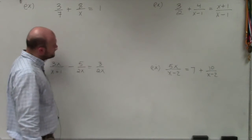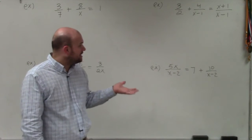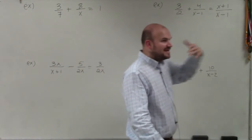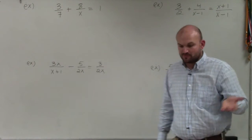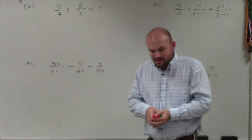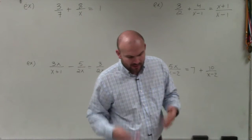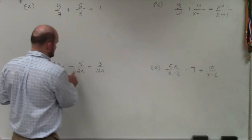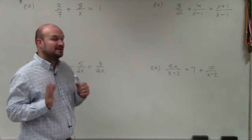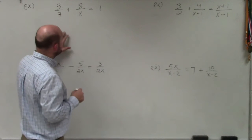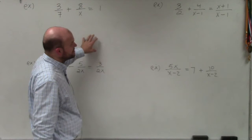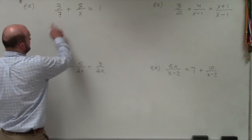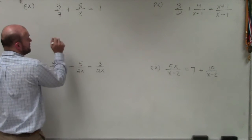In these examples, we're solving a rational equation where you can see I have variables in the denominator. We can't solve an equation when we have variables in the denominator. So basically, what we're going to want to do is eliminate the variables in the denominator by multiplying every single one of our expressions by the LCM, or LCD, which is the least common denominator.